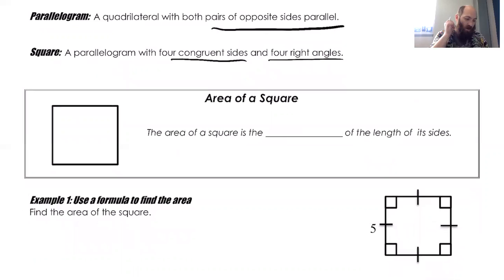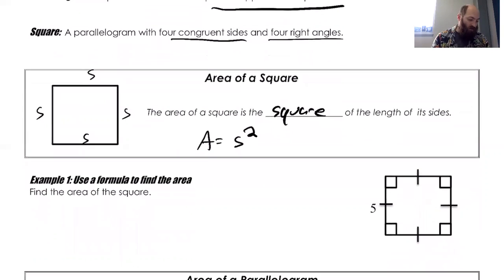So start with this, area of a square. The area of a square is the square of the lengths of its sides. So if I call this side S, all four are the same, then the area of that is just S squared. That's it. So this one is pretty straightforward.